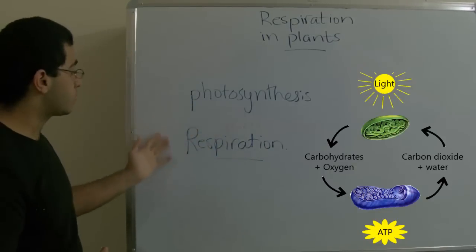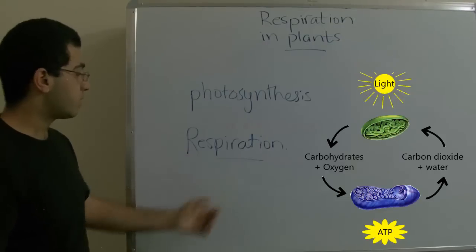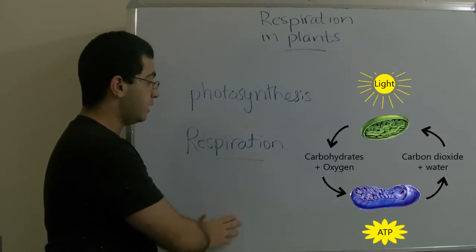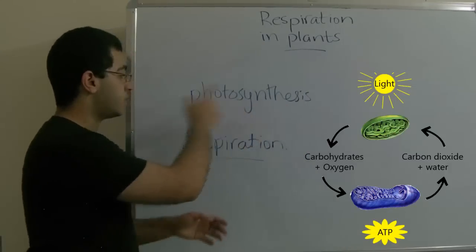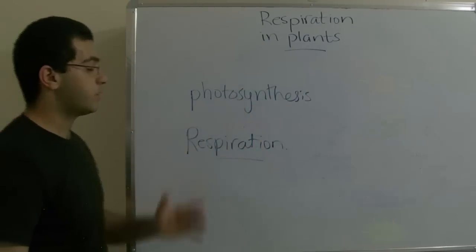Photosynthesis produces glucose which goes inside the mitochondria, releases energy, and returns carbon dioxide and water which goes into photosynthesis, and this cycle goes on.